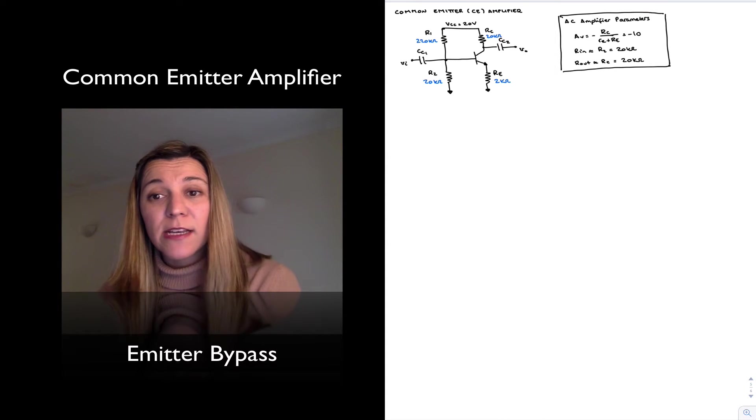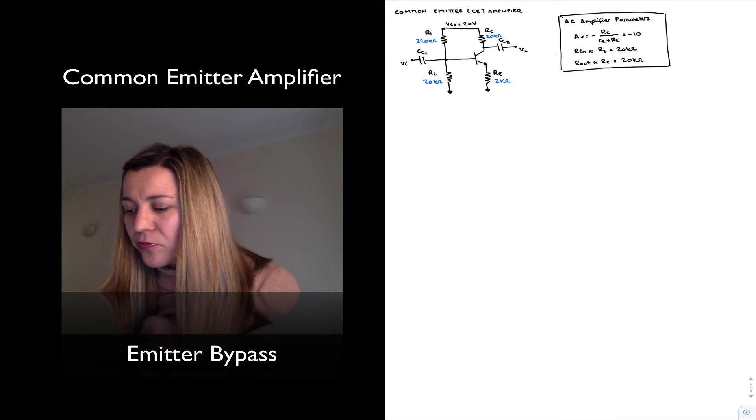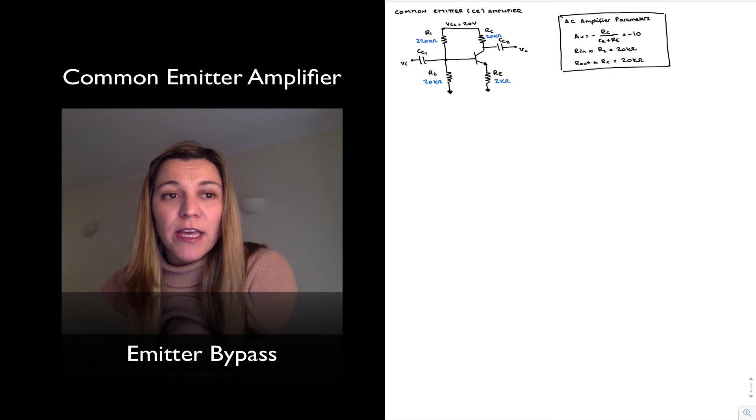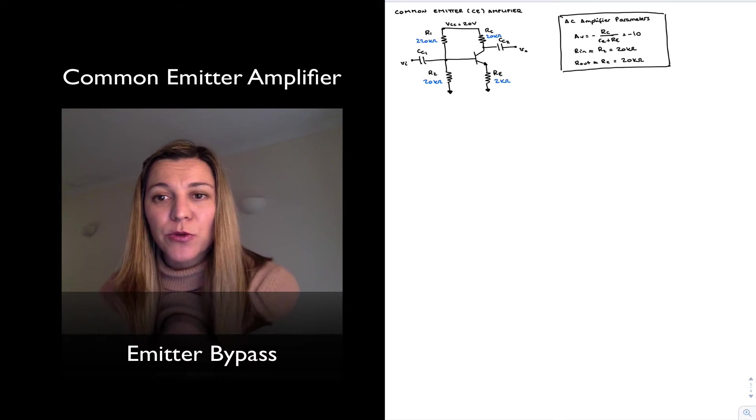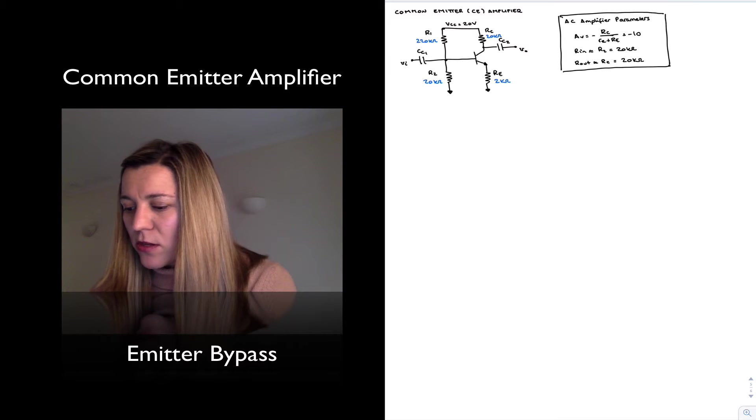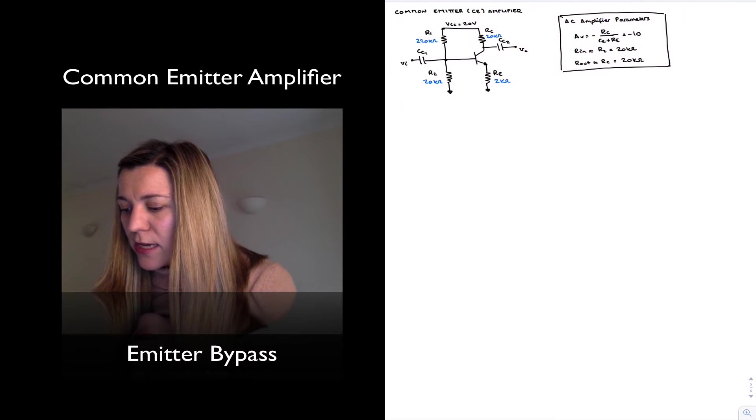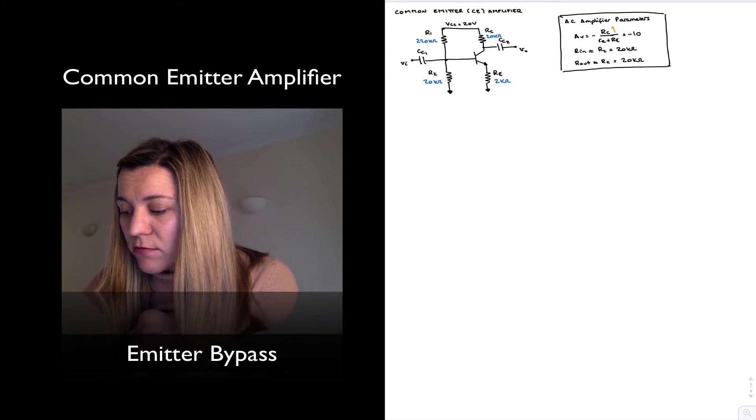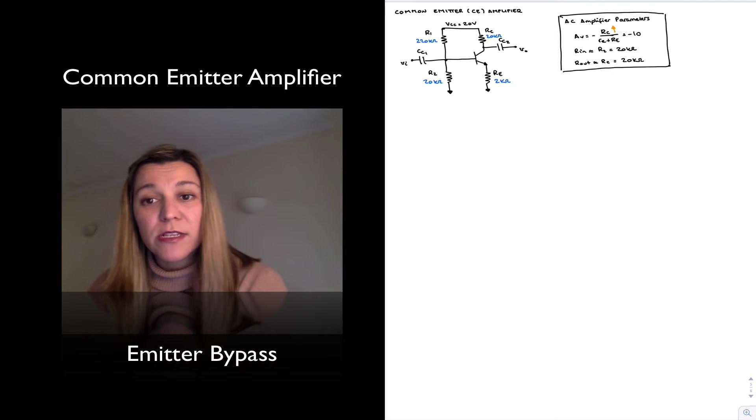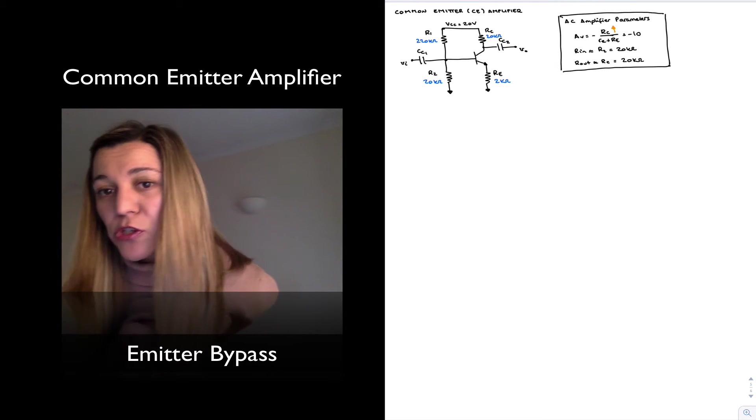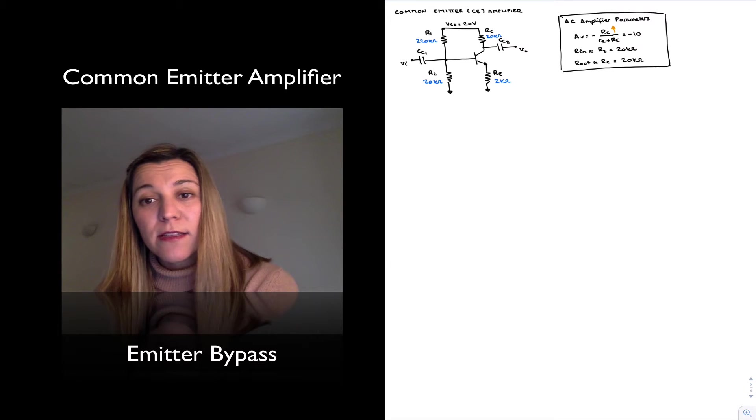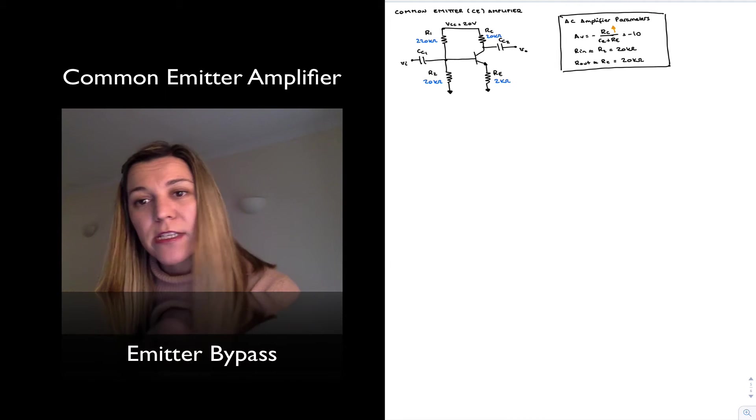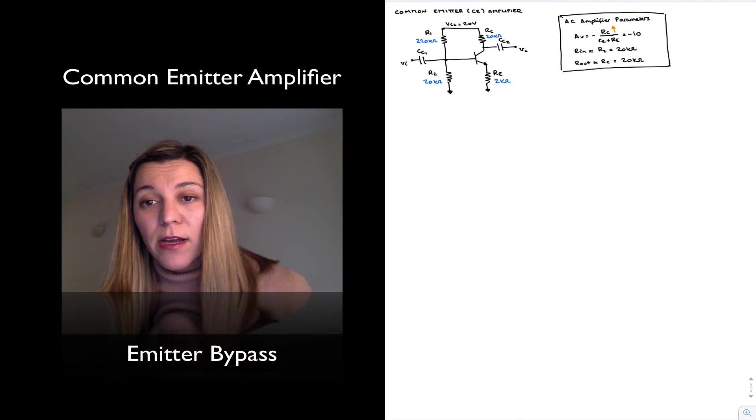But normally when we are designing an amplifier, we would like to be able to set up the gain. When we look at the expression for the gain, we can try to come up with ways that we could increase it, let's say, to negative 50. Since the gain is proportional to the ratio of RC to RE, we could say one way of increasing the gain would be increasing the numerator of that expression, so increasing RC. Another possible way would be decreasing the denominator, which will involve decreasing either little RE or big RE.